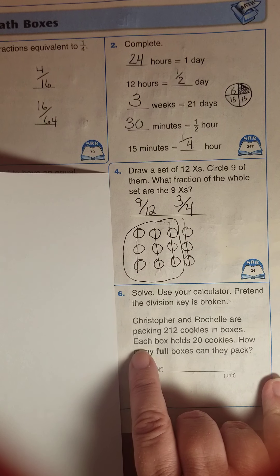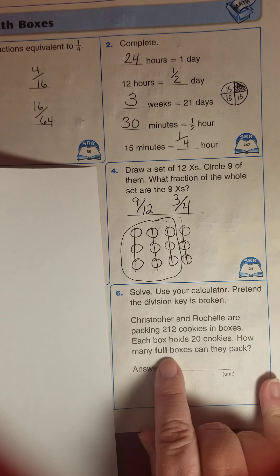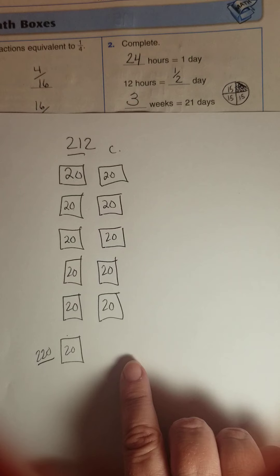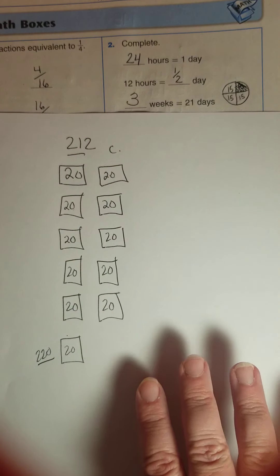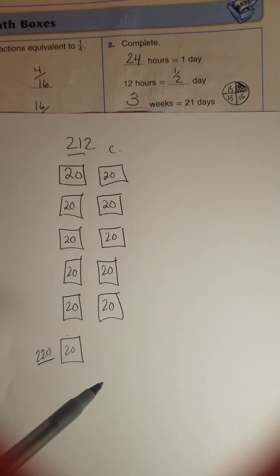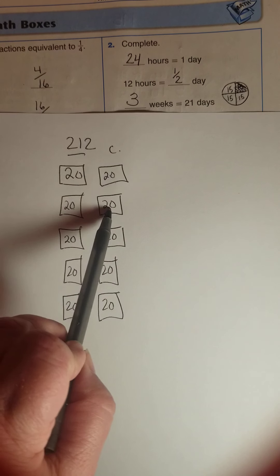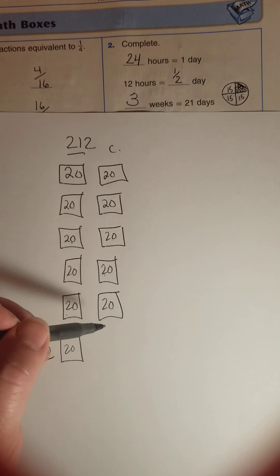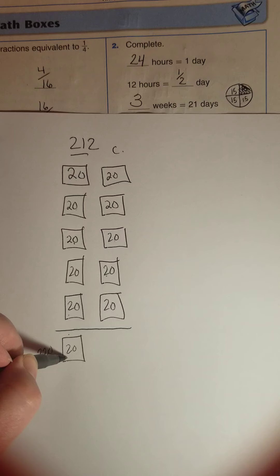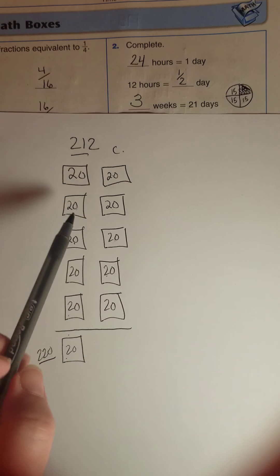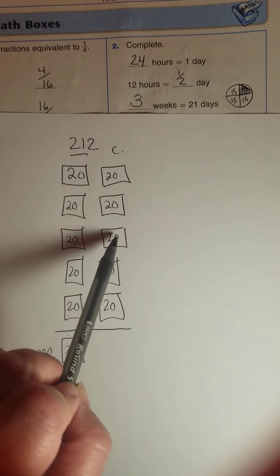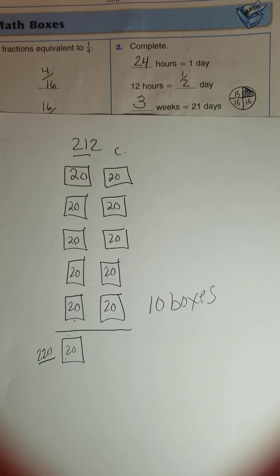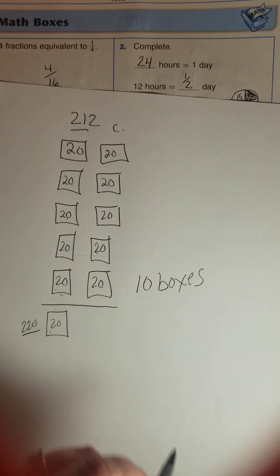Let's go back and see what they asked us again. I like to re-read things and always be sure that I'm answering according to what the question's asking. Each box holds twenty cookies. How many full boxes can they pack? That means we can't just stick some leftover cookies in a box. We have to probably just have some cookies that aren't going to go in a box. So twenty, forty, sixty, eighty, a hundred, one twenty, one forty, one sixty, one eighty, two hundred. That was our cutoff because if we went another one here, it would be too many. How many full boxes did we pack? Two, four, six, eight, ten boxes.